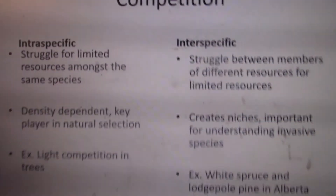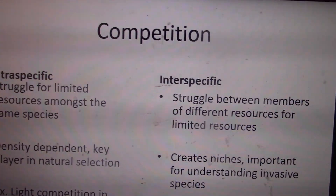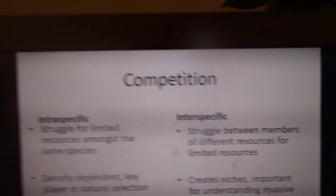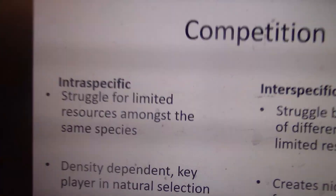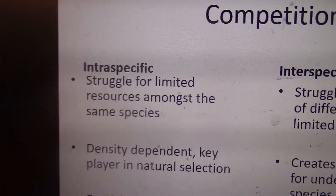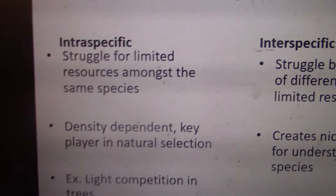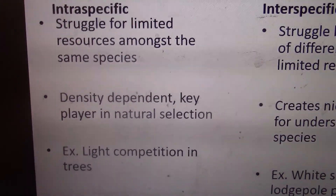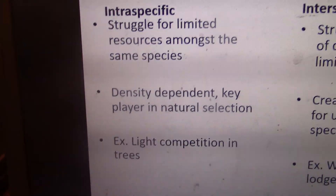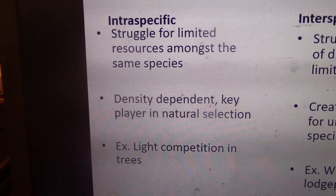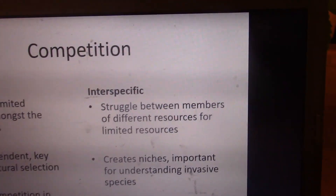A quick reminder: competition is a struggle between organisms for limited resources, and we have two main types. Intraspecific competition is a struggle for limited resources amongst the same species — generally that's territorial competition or competition for mates. You can think about a rutting season where males compete for multiple females. Intraspecific competition is always density dependent.